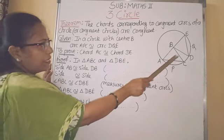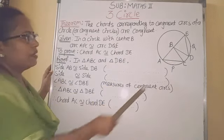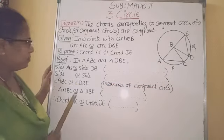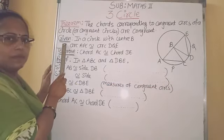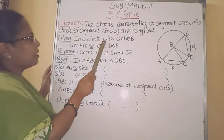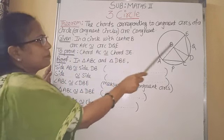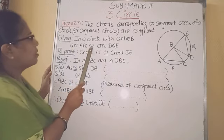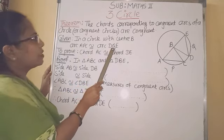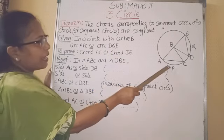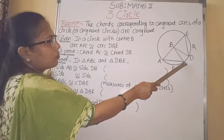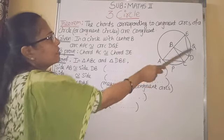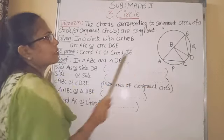The chords corresponding to these arcs — chord AC and chord DE — are congruent. We write: given, in a circle with center B, arc APC is congruent to arc DQE. These are the two congruent arcs that are given.